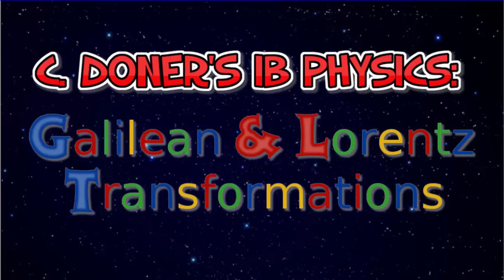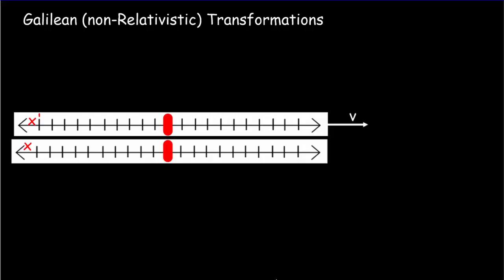Today we're going to talk about transformation equations. We'll begin with the non-relativistic Galilean transformation equations and then move on to the relativistic Lorentz transformation equations. We're going to develop these transformation equations for relativistic physics, but to learn what we mean by a transformation equation, let's look first at the Galilean transformations — the non-relativistic transformations.